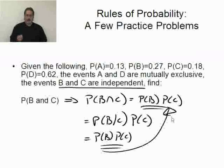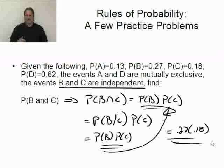So, what is the probability of B times C? Well, B is 0.27. Let me see. This equals 0.27 times C is 0.18. You can grab a calculator or whatever and do the arithmetic, but there's your solution. Multiply those two guys together and there you go. Let's see what's next.